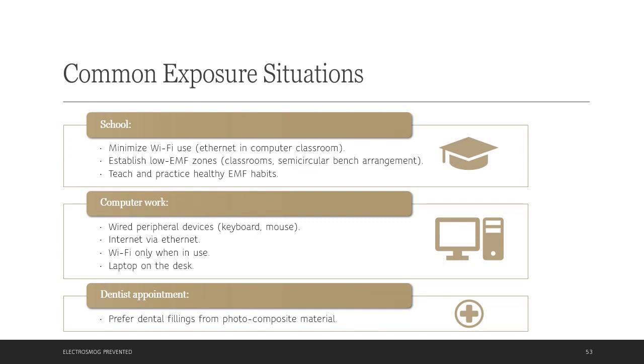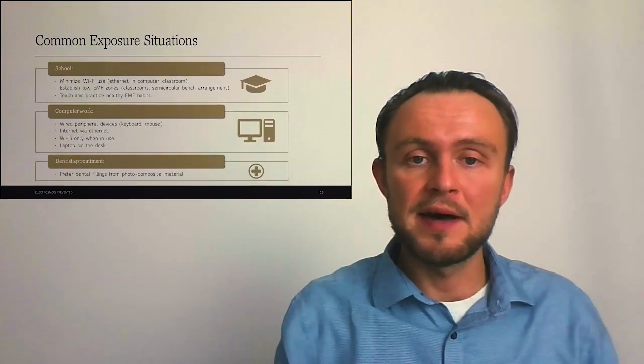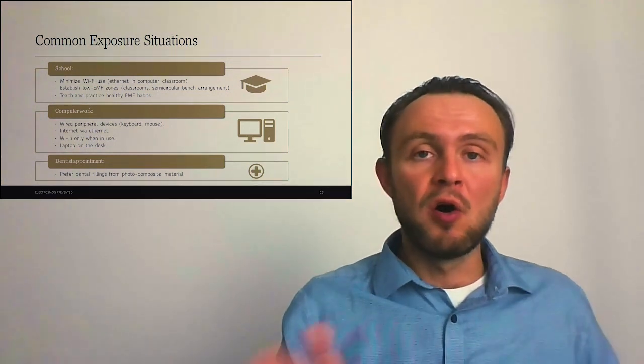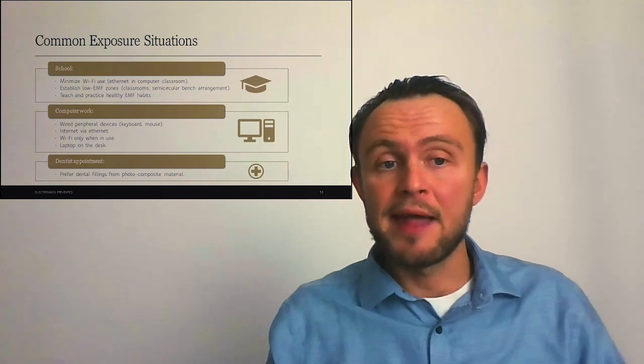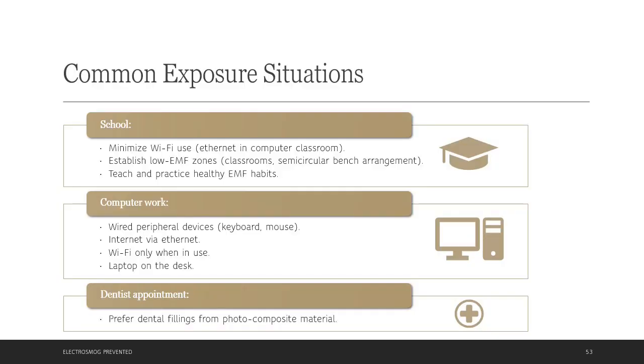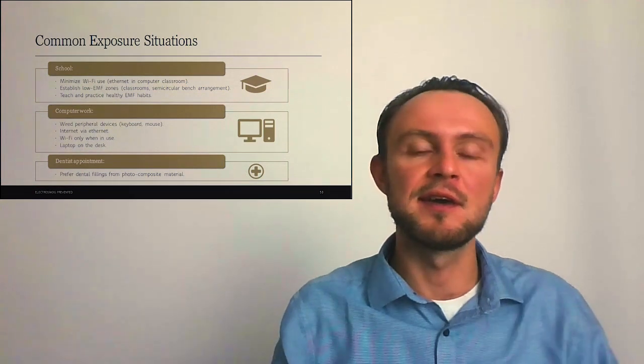In schools, we can minimize Wi-Fi use by deploying Ethernet connection for computers in computer classroom. We may establish low EMF zones in classrooms. For example, if we don't use any electronic devices at all, we can ban using mobile phones by school rules. Or if we are using tablets and computers for improved learning, we can consider semicircular bench arrangement. And also teach healthy EMF habits. So during the classroom, students may use internet for finding information, but then switch off, make notes during the classroom. And at the end, quickly connect to Wi-Fi to synchronize data to the cloud. All major vendors like Google or Microsoft support offline work and syncing to cloud.